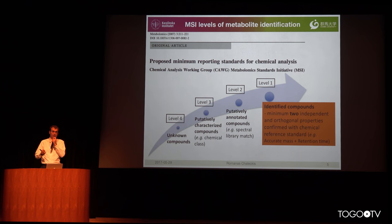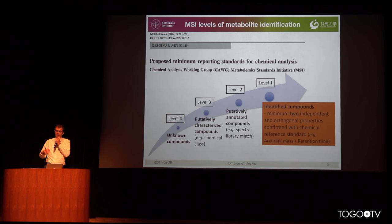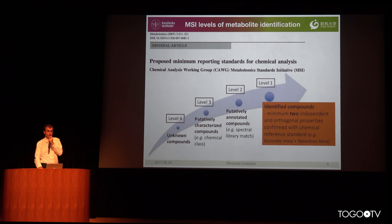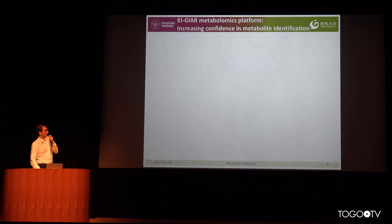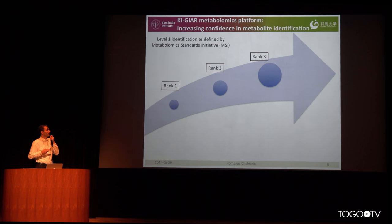For example, accurate mass and retention time. However, metabolites are very diverse and there are large numbers of very similar ones, so quite often retention time and two parameters are not enough. In our KI metabolomics platform we go a couple of steps further.